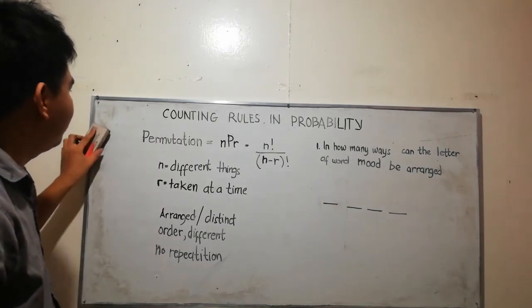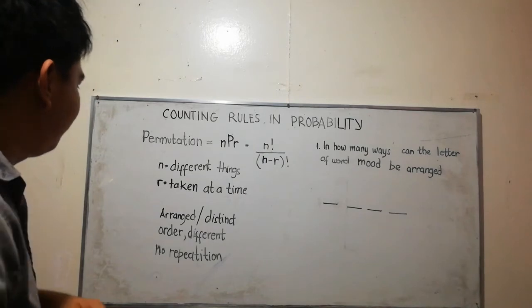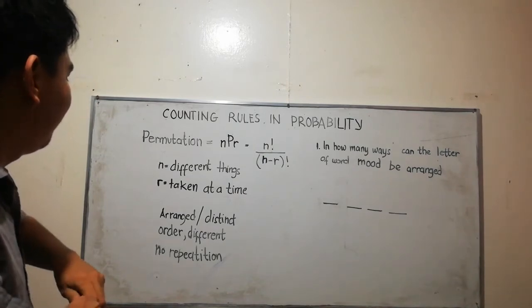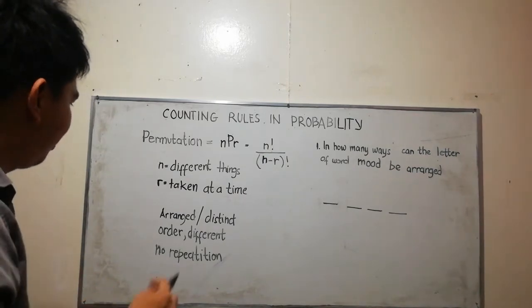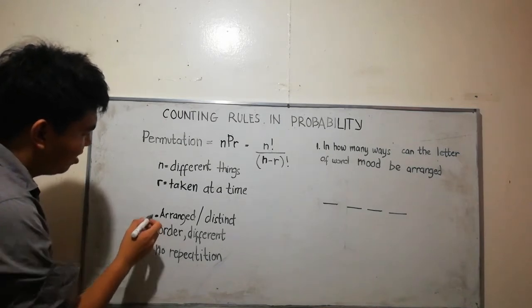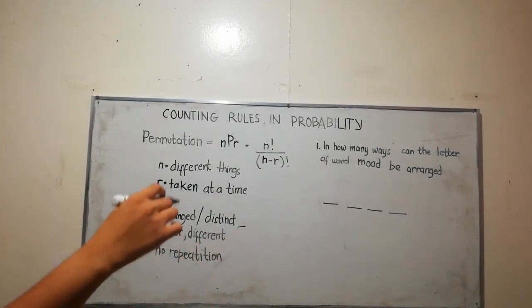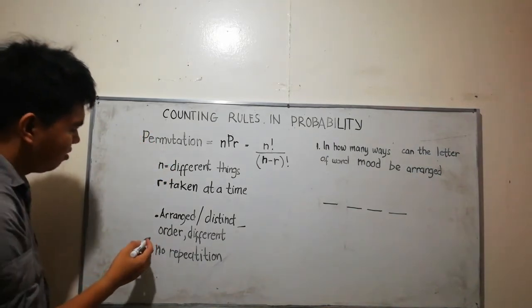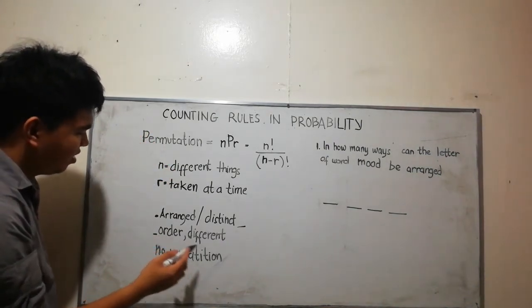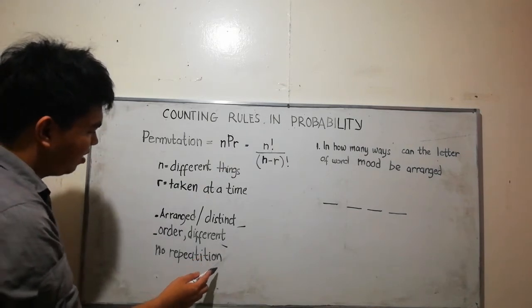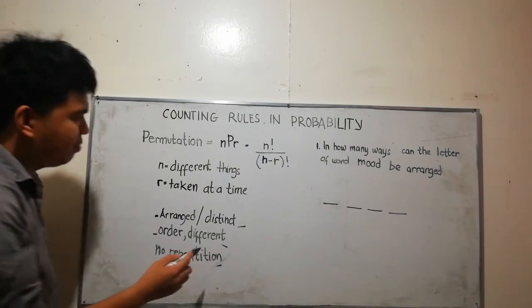How do we know if the problem is permutation? If you see the word arrange, distinct, order and different, no repetition, that's the indication that the problem is a permutation.